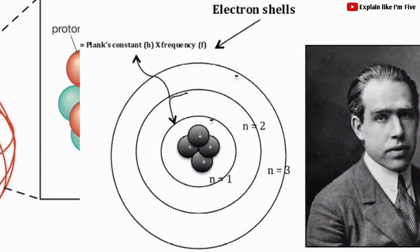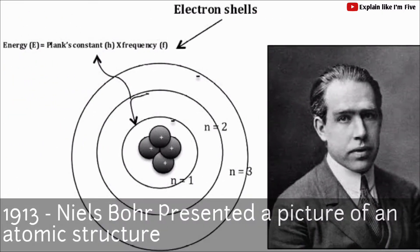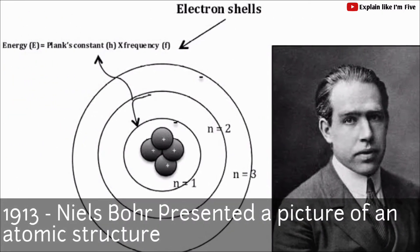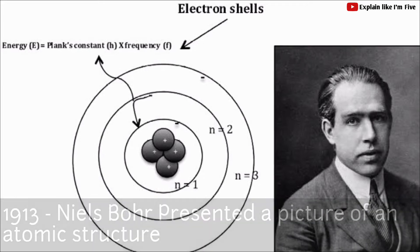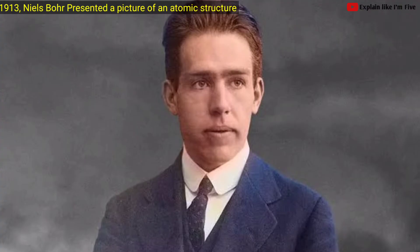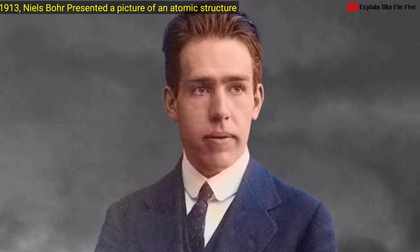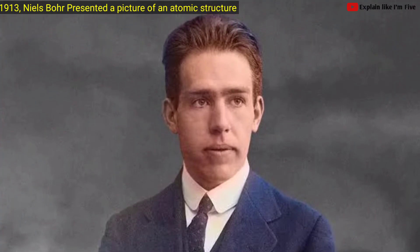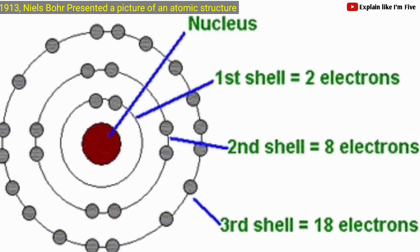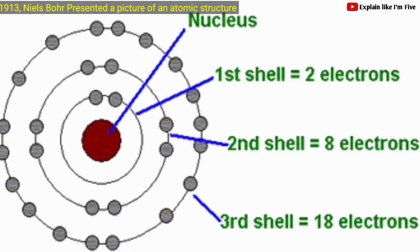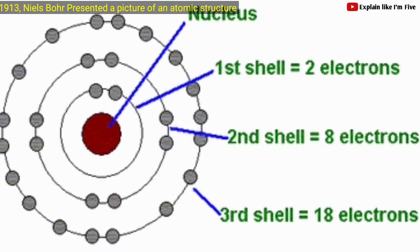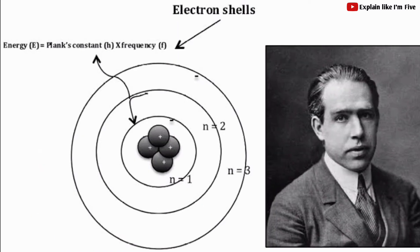In the year 1913, Niels Bohr presented a picture of atomic structure. He passed on to a study of the structure of atoms based on Rutherford's discovery of the atomic nucleus, and this led him to the picture of his atom.